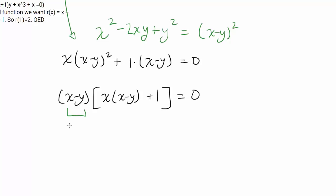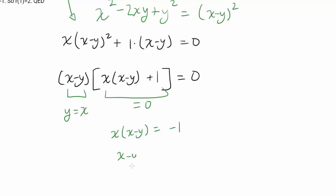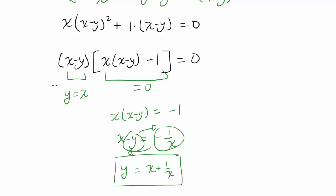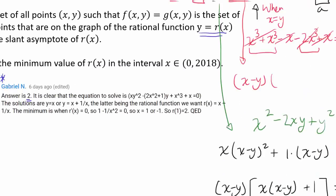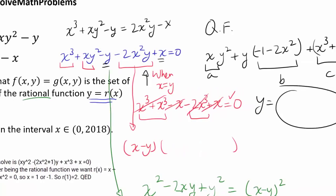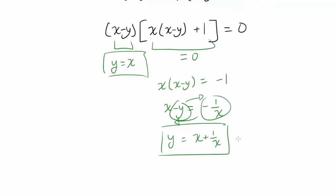So we know (x minus y) equals 0 is one possibility, meaning y equals x. Or the other factor can be 0: x(x minus y) equals negative 1, so dividing by x we get x minus y equals negative 1 over x, and rearranging we get y equals x plus 1 over x. So we have these two possible solutions, and we know our solution has to be a rational function r(x) and the slant asymptote of r(x).